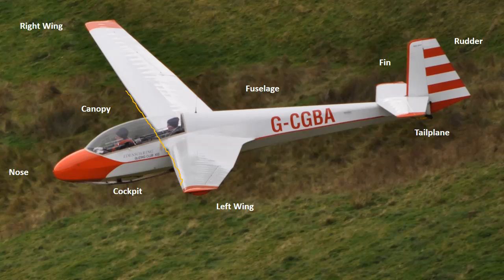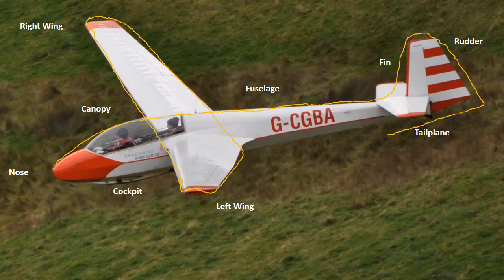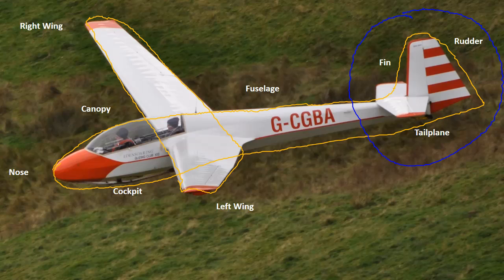Firstly, there's the wings, and then there's the fuselage which is the body of the glider and includes all of this. But we also divide the fuselage up into a series of smaller parts, so we talk about the tail of the glider, which includes the sub-parts of the rudder, the fin, and the tail plane. Depending on the design of the glider, the tail plane can be in a low position like it is here, or in the high position at the top of the fin.